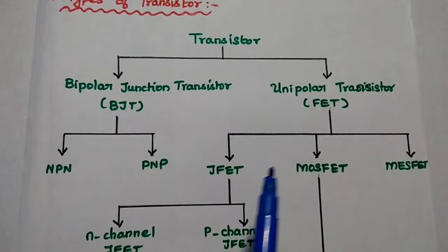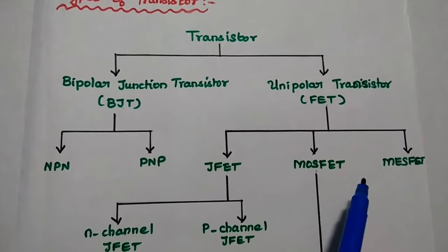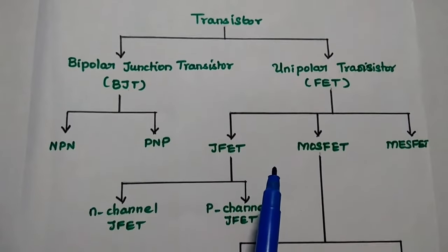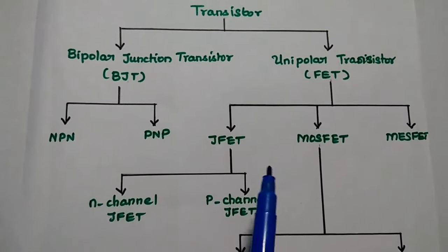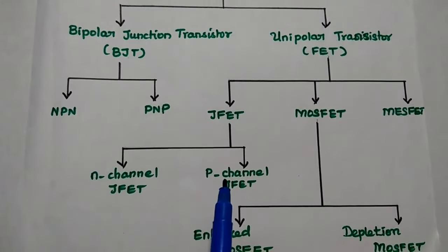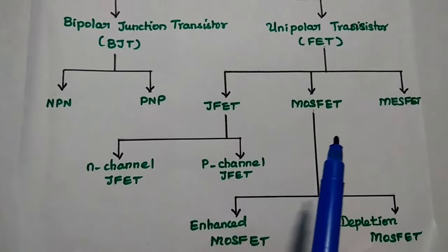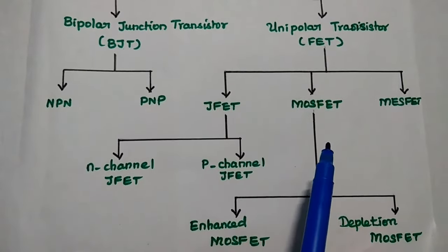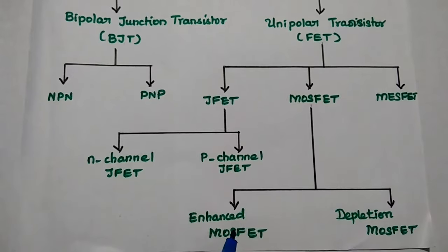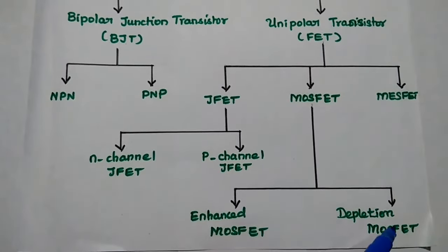FET is classified into three types: JFET, MOSFET, and MESFET. JFET means junction field effect transistor; it is further classified into N-channel JFET and P-channel JFET. MOSFET, that is metal oxide semiconductor field effect transistor, is further classified into enhanced MOSFET and depletion MOSFET.